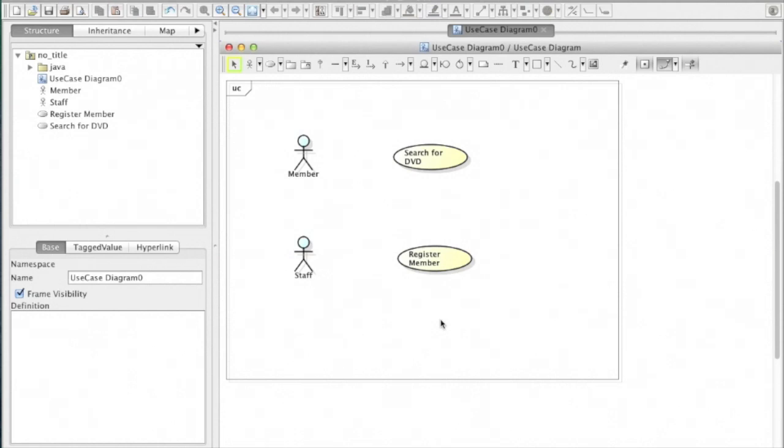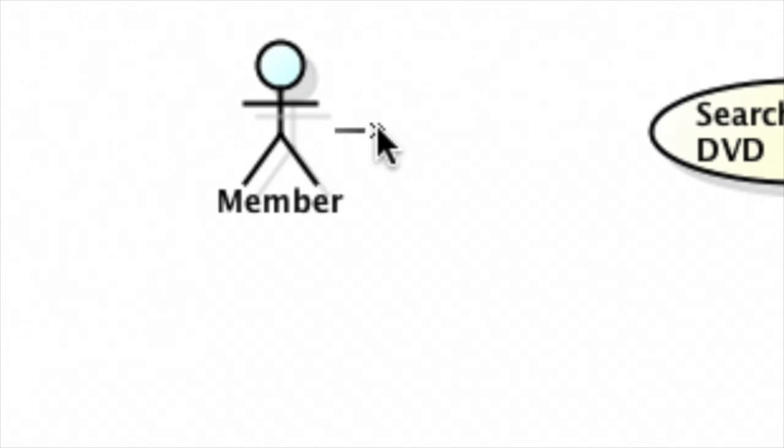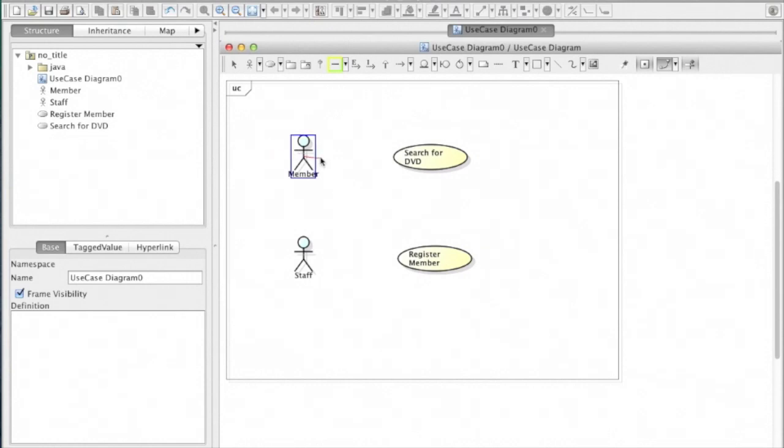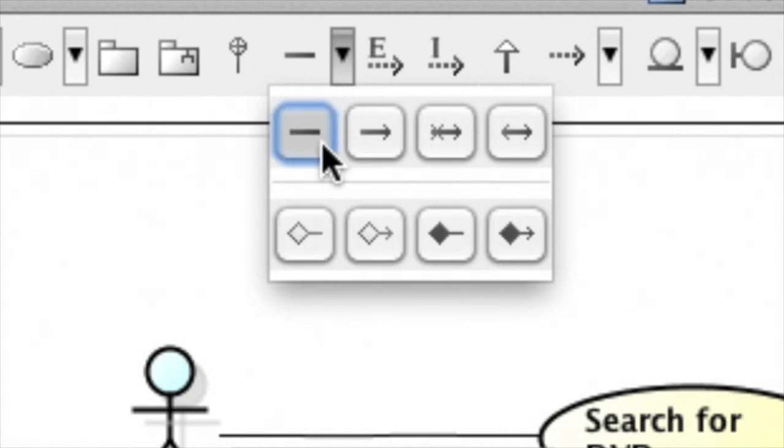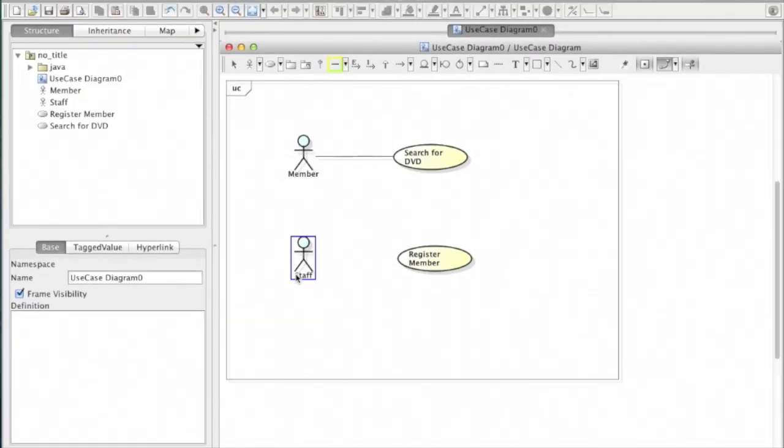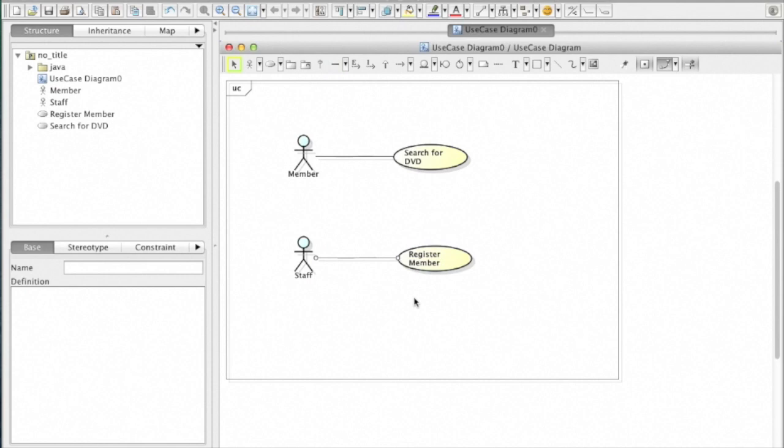Now, let's create association lines between an actor and use cases. There are two ways to do so. One is using this mini icon that appears when you have your mouse over an actor. Select it, and then click on the target use case. Another way is same as how you created an actor. Select an association line on the toolbar, and then click on an actor and use case.